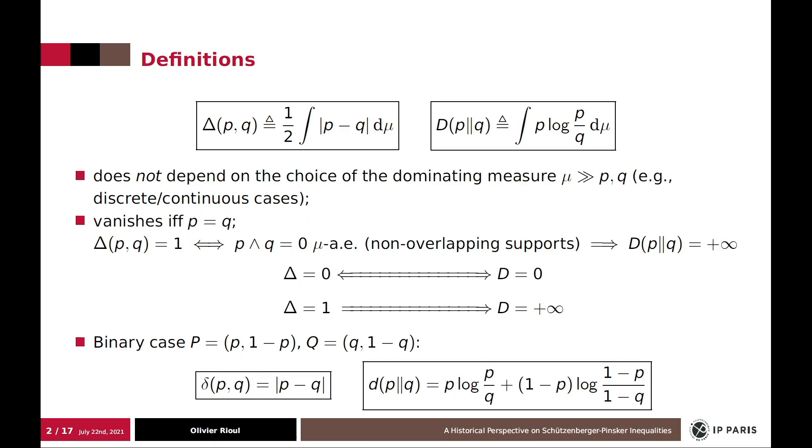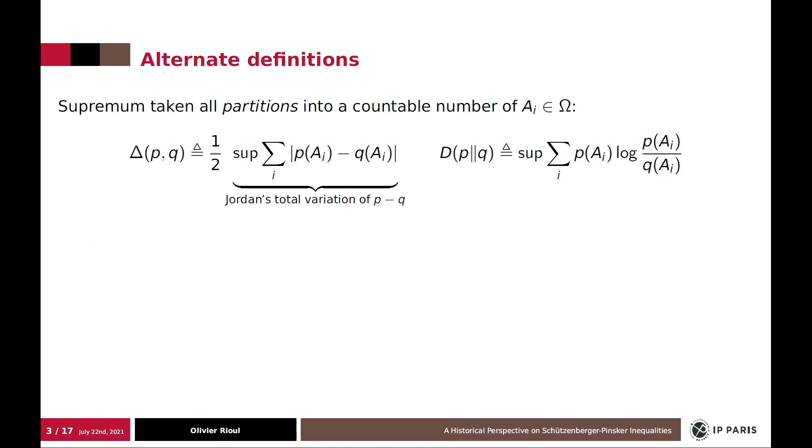In a binary case you have some simple expressions. For Bernoulli distribution, delta is just the difference between the two parameters. There are also some alternate definitions which are really interesting when you consider a supremum taken over all possible partitions over the entire space. And so you can define delta as being what is classically known in mathematics as the total variation of the signed measure P minus Q. And similarly, divergence can also be expressed as a similar expression.